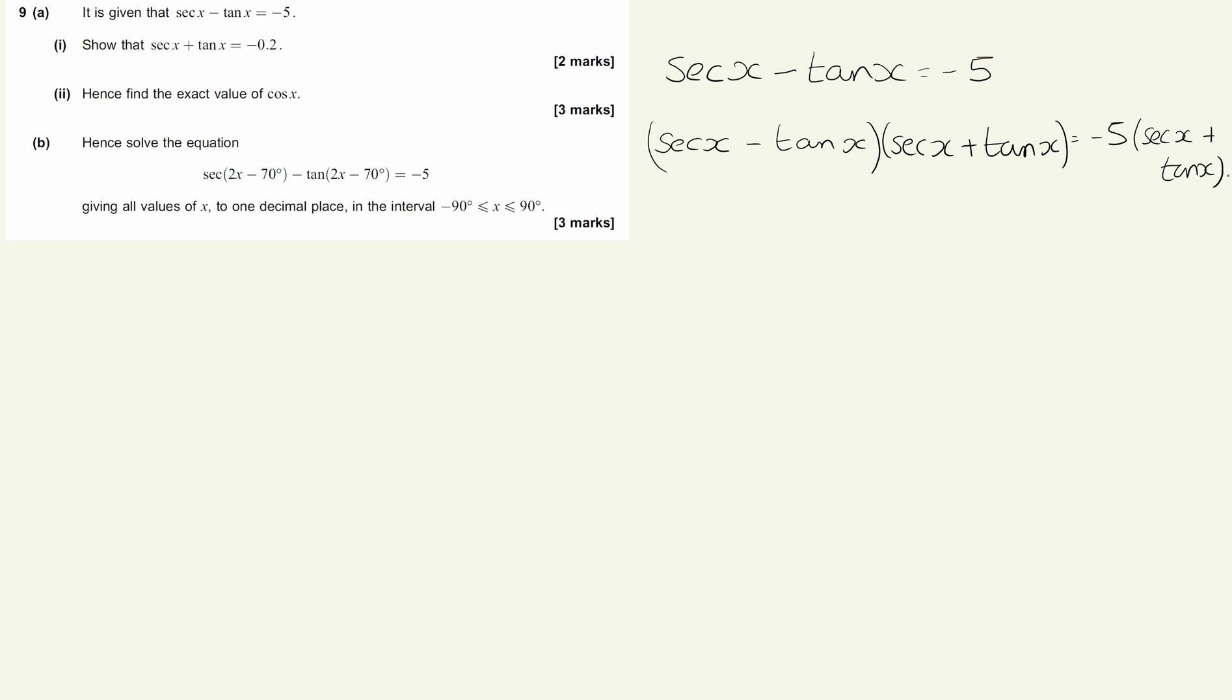Expanding the left-hand bracket gives me sec squared x minus, that's those two multiplied, minus the positive sec x tan x. So that's positive sec x tan x, then I've got negative sec x tan x, and then finally I've got minus tan squared x.